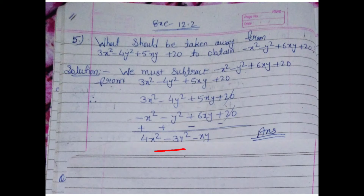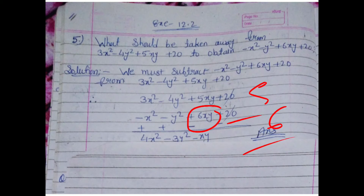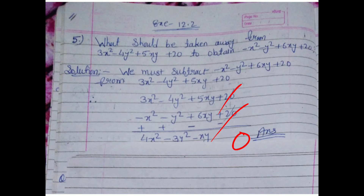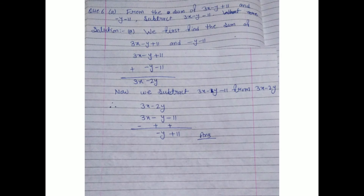Then plus 5xy minus 6xy: 5 minus 6 gives minus 1, so that's minus xy. And plus 20 minus 20 — these cancel out, giving zero. So the final answer for Question 5 is 4x squared minus 3y squared minus xy.